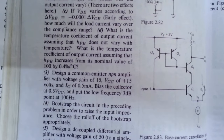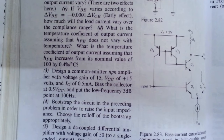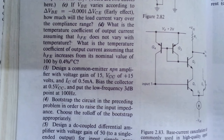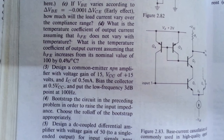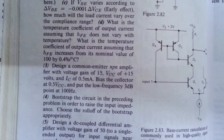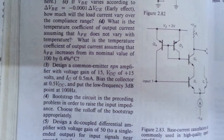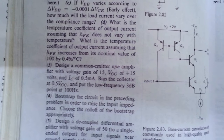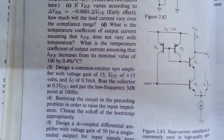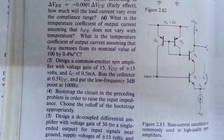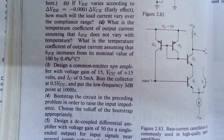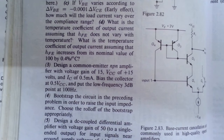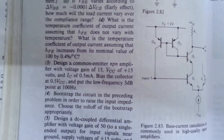So to start the design process, let's read question number 3. Question number 3 says: Design a common emitter NPN amplifier with a voltage gain of 15, VCC of plus 15 volts, and IC of 0.5 milliamps. Bias the collector at half of VCC and put the low frequency 3 dB point at 100 Hz. The requirement here is to design a common emitter amplifier following best practices from Chapter 2 of the Art of Electronics, and once we design it, we'll test it accordingly.